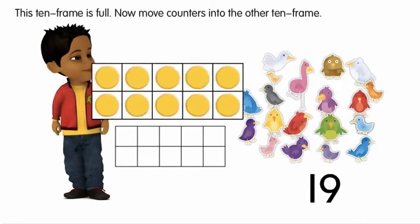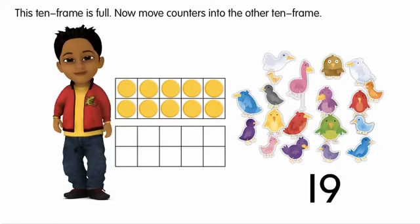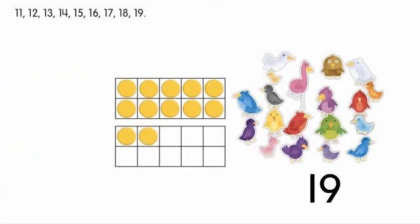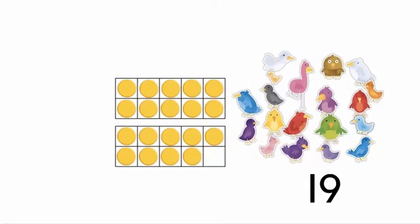This 10 frame is full. Now move counters into the other 10 frame. 11, 12, 13, 14, 15, 16, 17, 18, 19. How do the counters match the birds? Both show 19.